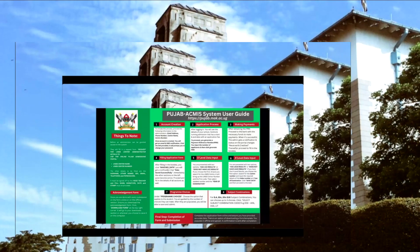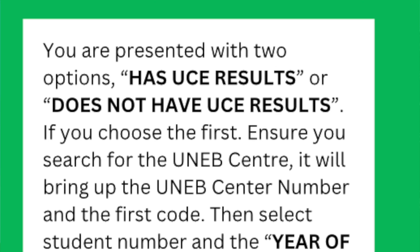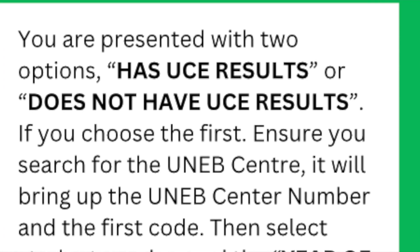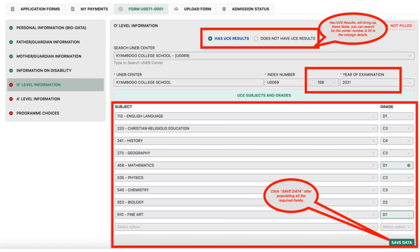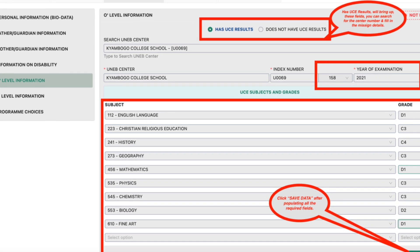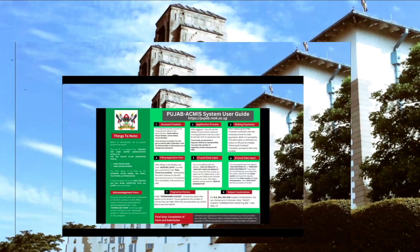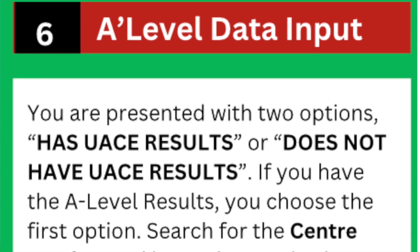Next is the O-level information section. This has also been simplified — we no longer expect you to provide all the subjects the candidates sat. We just need the index number and the center where they sat their O-level.